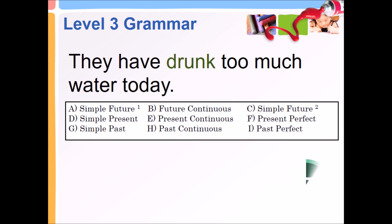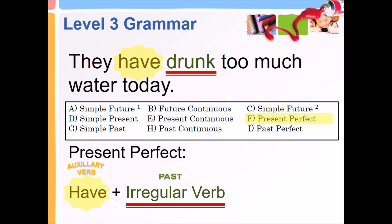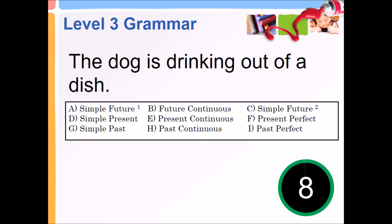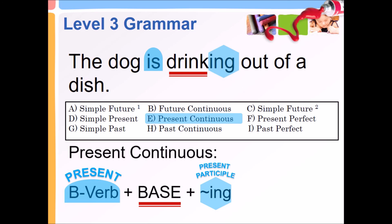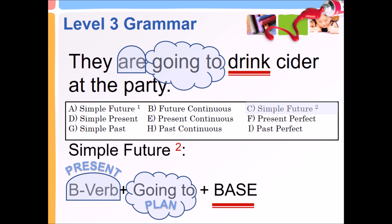They have drunk too much water today. Present perfect: auxiliary verb have plus past irregular verb. The dog is drinking out of a dish. Present continuous: present be verb plus base plus present participle ing. They are going to drink cider at the party. Simple Future 2.